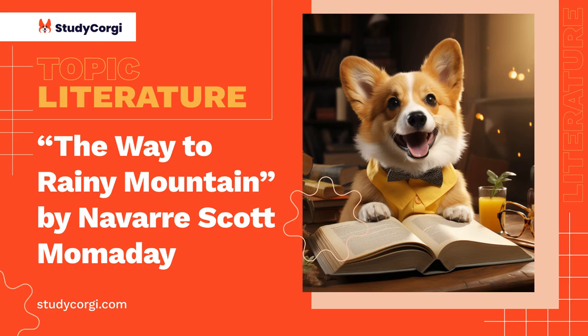In The Way to Rainy Mountain, Momaday includes a wide range of landscape and place descriptions for the purpose of showing the uniqueness of the land, the special vision the Kiowa people had of the landscape, and the tight connection to it expressed in their detailed knowledge of the lands and places. These descriptions can be found from the very beginning of the book right to its end, and their variety demonstrates the significance of the land to the author and his people. The descriptions are usually very detailed and colorful.